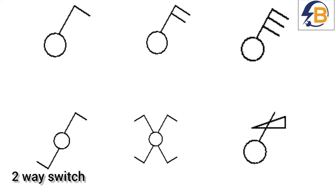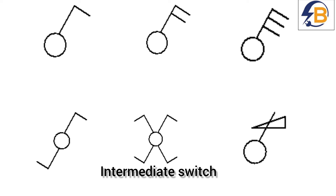A two-way switch is the one we use when you want to control a light from two different positions. They are also used together with intermediate switches to control a light or a number of lights from three different points. I have shared some videos under this one where I have explained how to use all these types of switches — how to use an intermediate switch, a two-way switch, and a simple one-gang one-way switch. Just click on 'More' at the end of the description below to see all those videos.